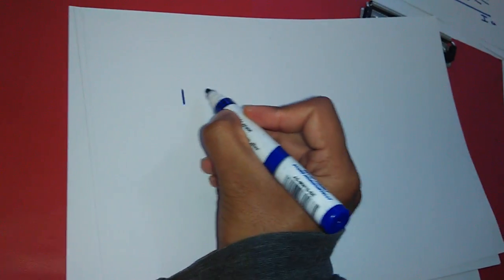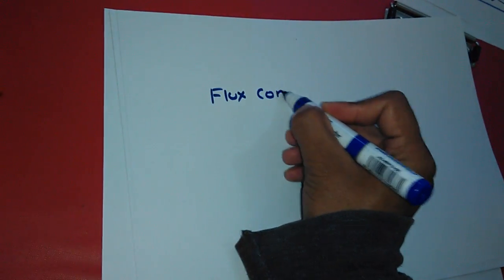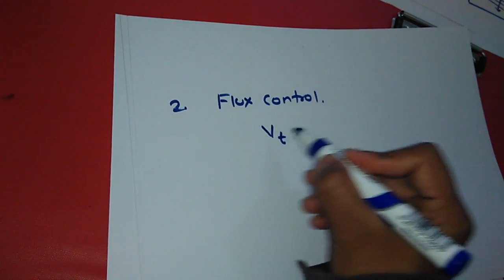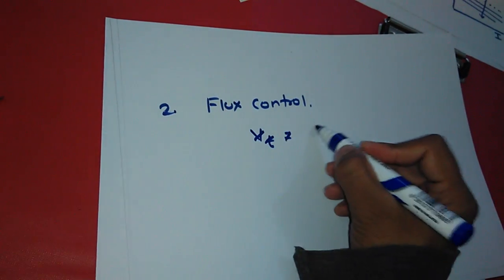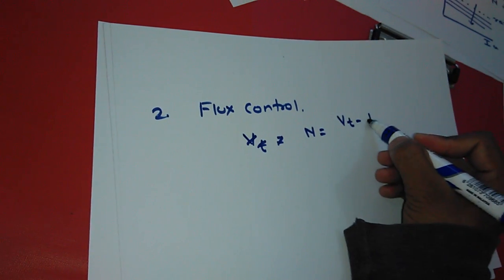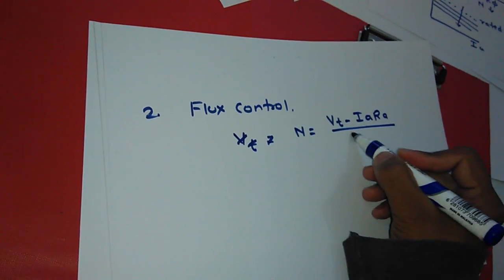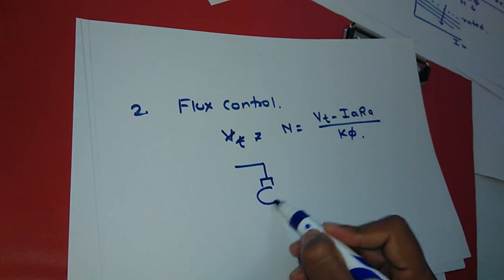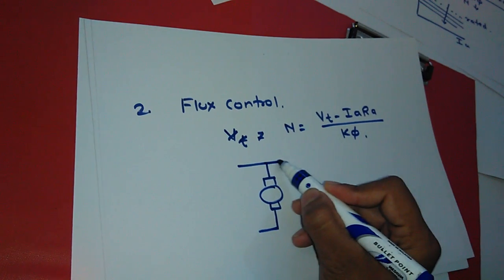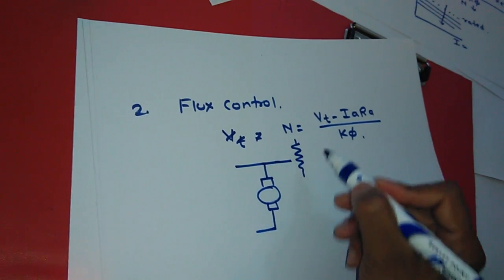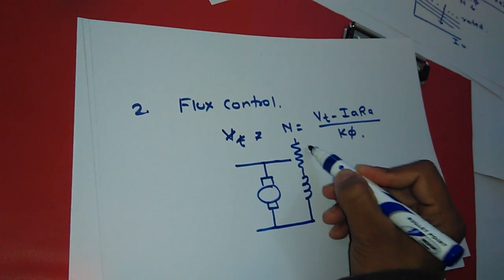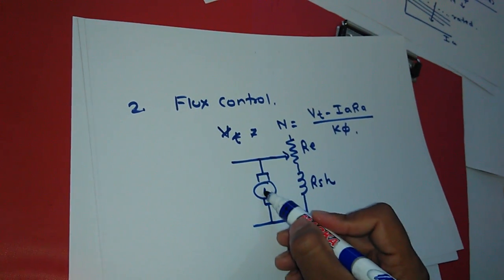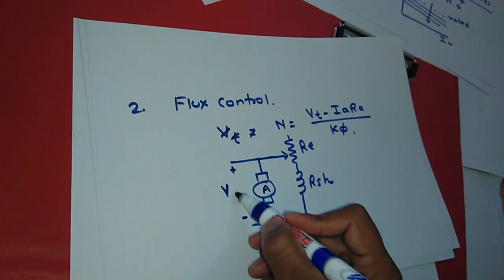The next method is flux control. In this method, again from the speed equation we can see N is equal to Vt minus Ia Ra upon Kφ. The circuit has the armature kept constant and resistance is connected in the field circuit. This resistance is called external resistance, RSH, and this is the armature part connected to the plus-minus supply voltage.